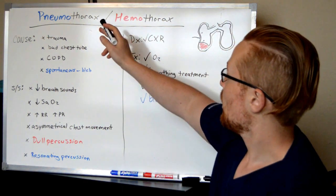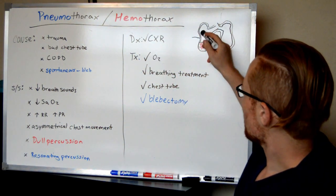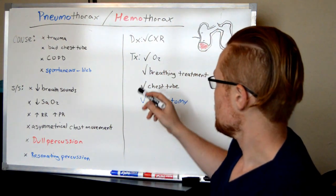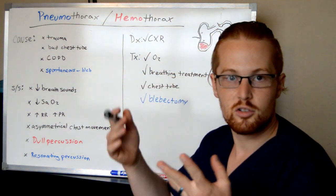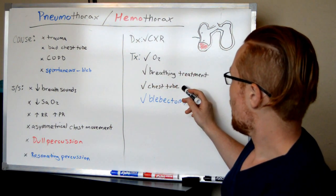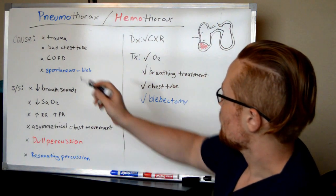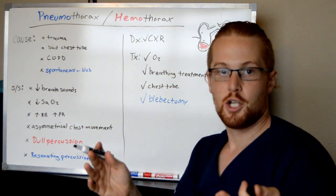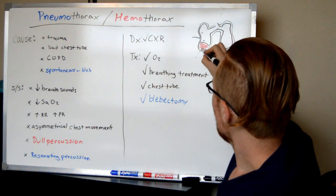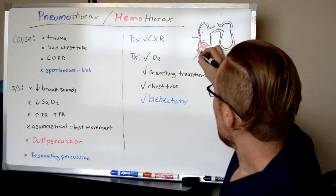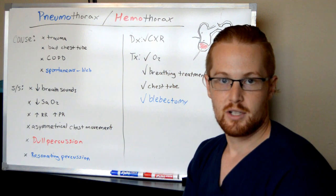For treatment of pneumothorax and hemothorax, you want to give them oxygen so that whatever lung space is available can work as best it can. They may also need a breathing treatment such as albuterol or other inhalers or nebulizers. The main treatment is putting in a chest tube. If it was due to a bad chest tube, check placement and make sure it's working correctly. Otherwise, they'll put a chest tube in and suck out all the blood and air to eliminate that extra space.